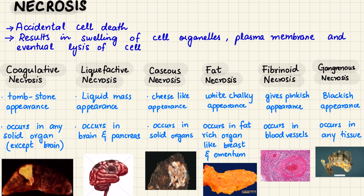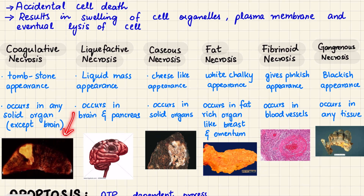Next is liquefactive necrosis, seen in tissues rich in enzymes such as the brain and pancreas. In this type, the tissue turns into a liquid mass due to digestion of the cells by their own enzymes. In the brain, it is often caused by strokes or infections and creates a soft, liquid-like area.